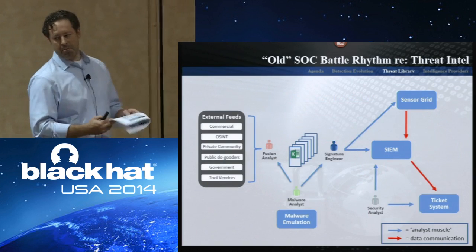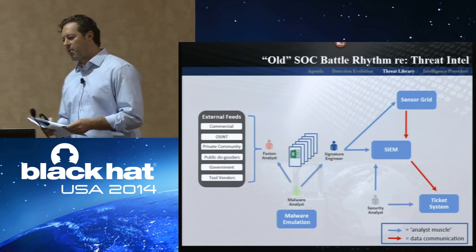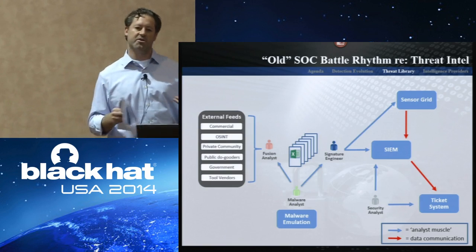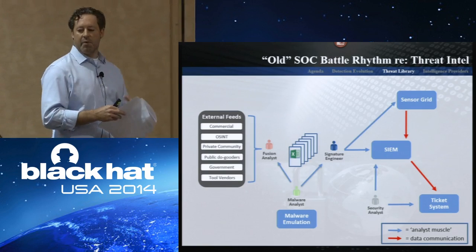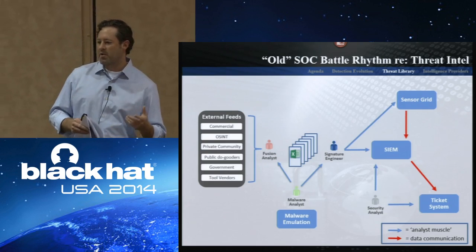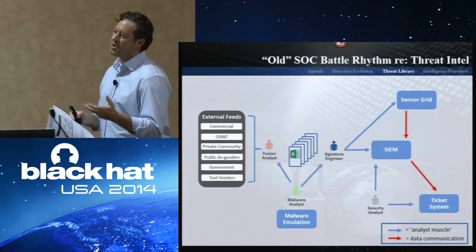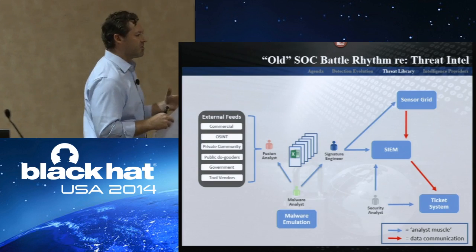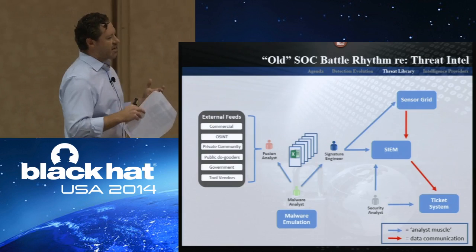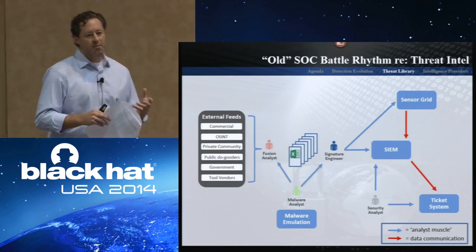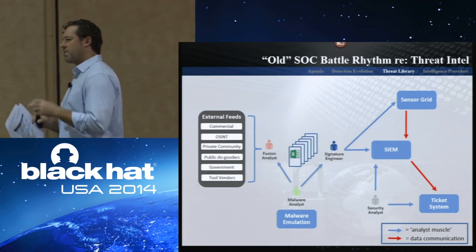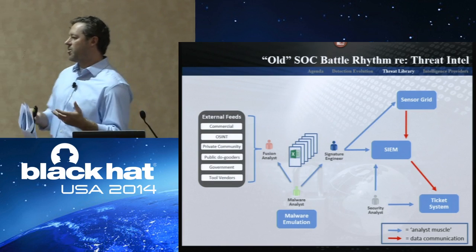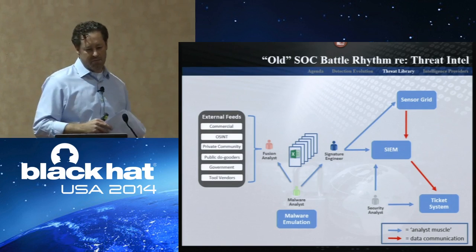The old SOC battle rhythm around threat intelligence was the ingestion of external threat intelligence — whether you're getting that from a commercial feed, whether you're scraping OSINT, whether you're involved in a private community, public do-gooders, a lot of people blog essential information. It's very indicator-rich data on the blogs. The government, the FBI, the JIBs — all those documents — they try to share the information that they can.